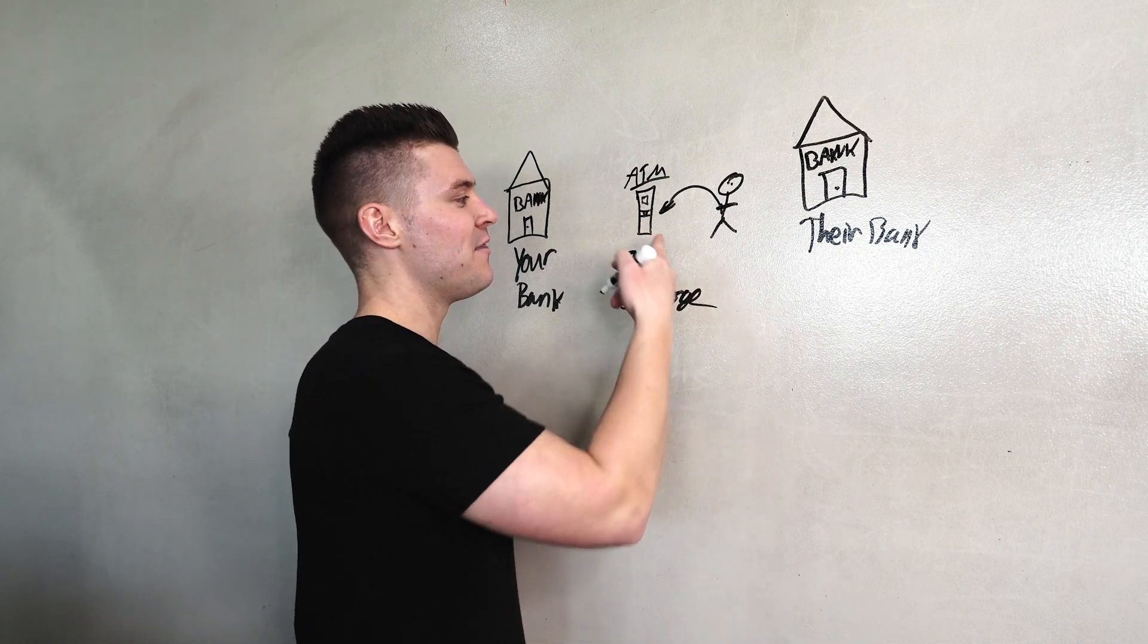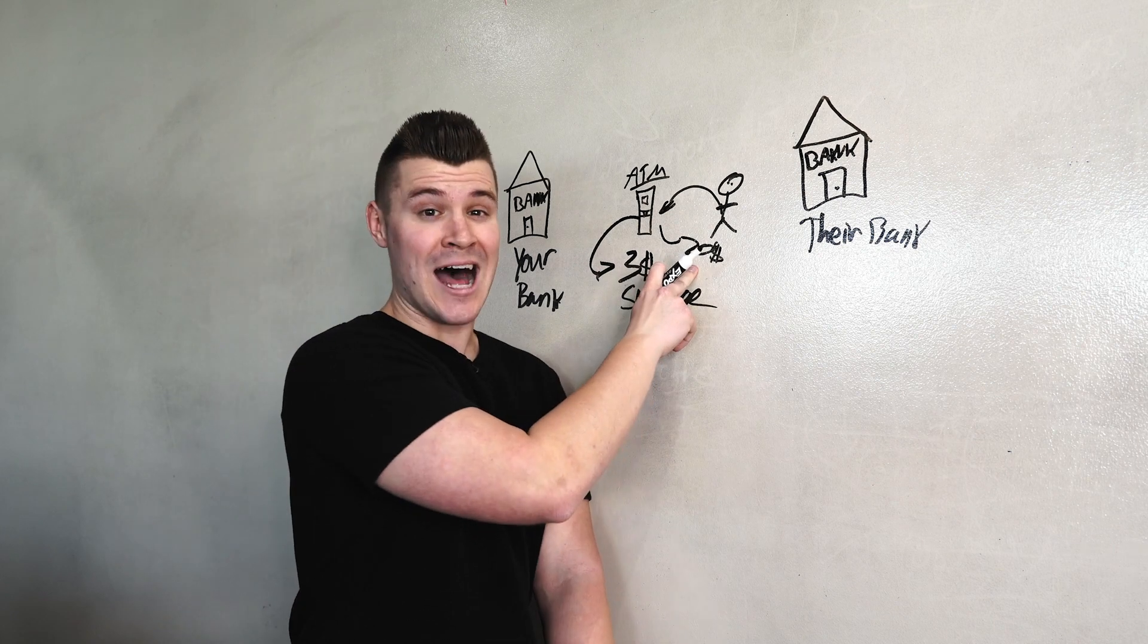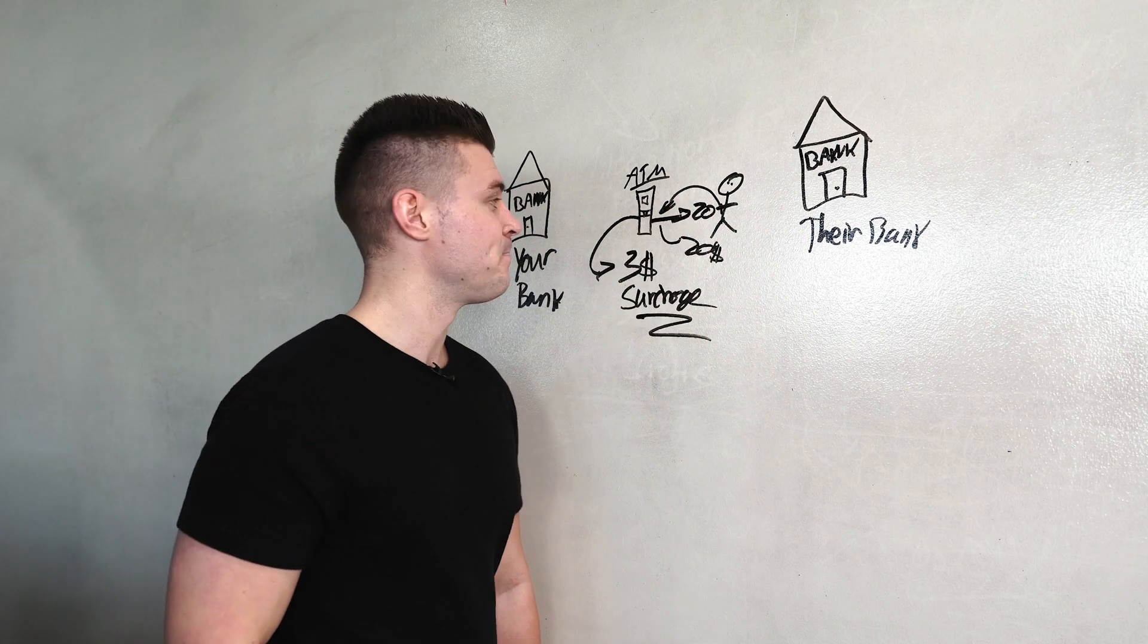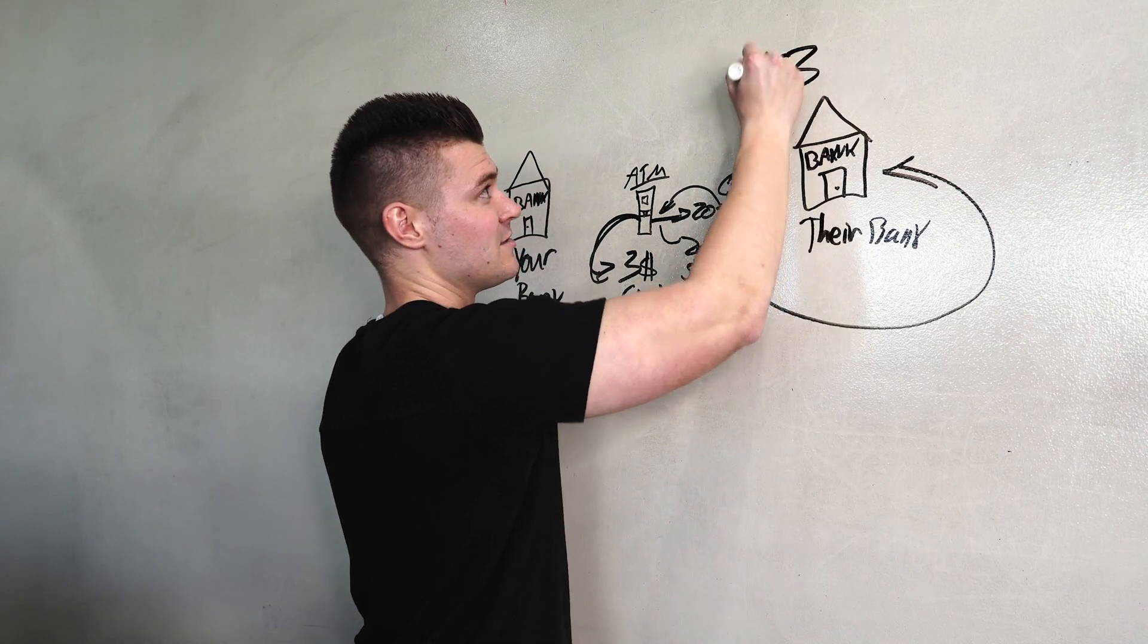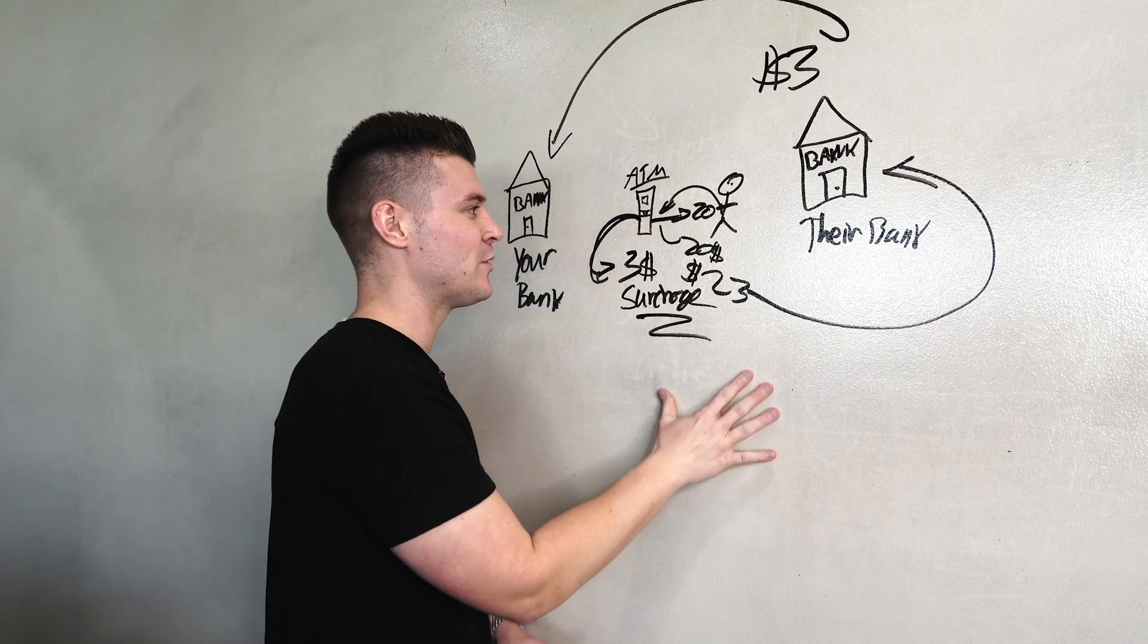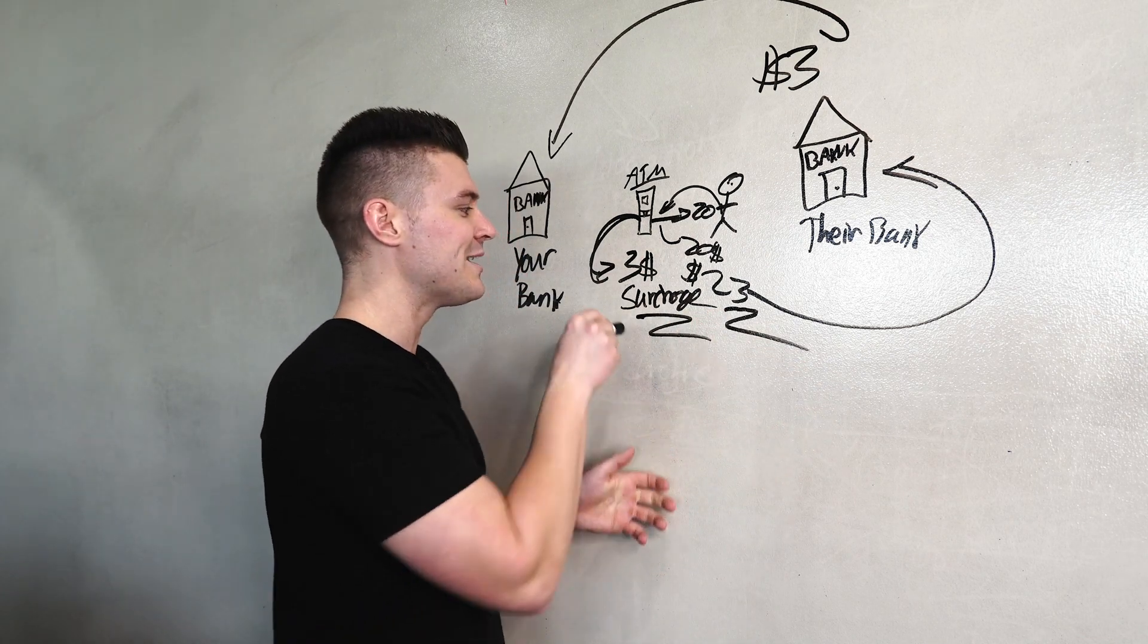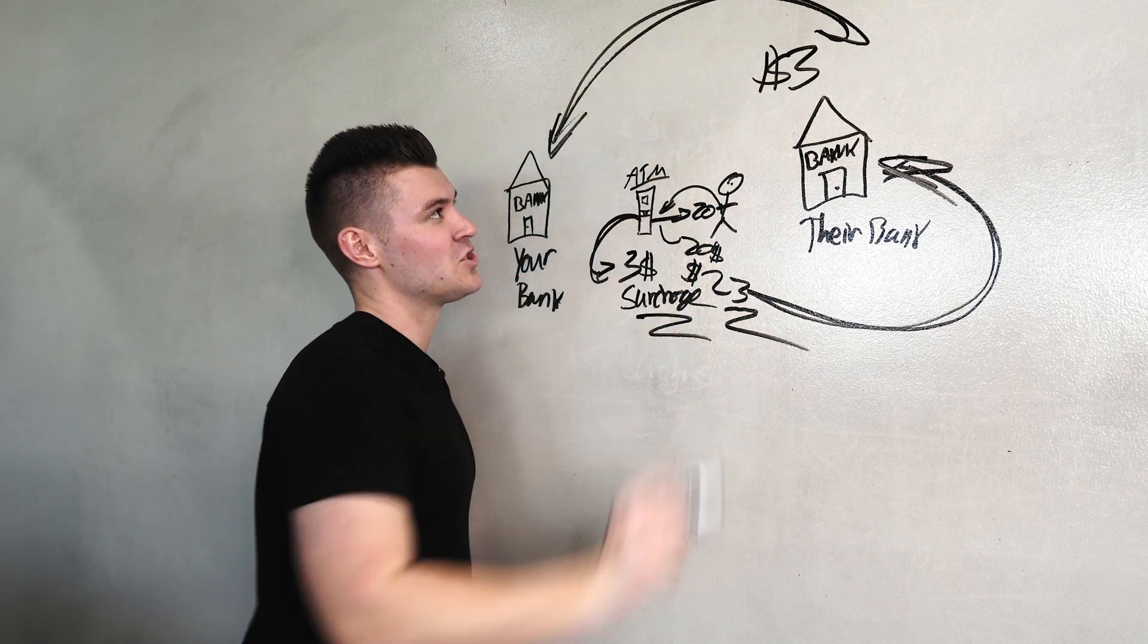We little humans go use somebody else's ATM machine. What happens then? Let's just say that they wanted $20. What is going to happen is this ATM machine is going to charge them $20 plus the $3 surcharge to get their $20 out. Now this person walks away with $20, gets charged $23 to their bank. And that $3 comes over to your bank.